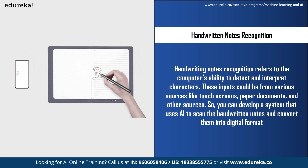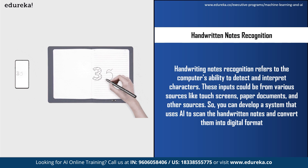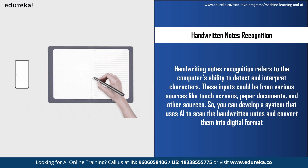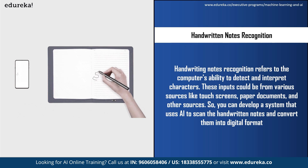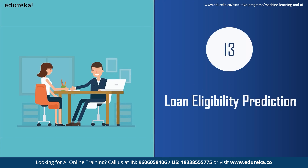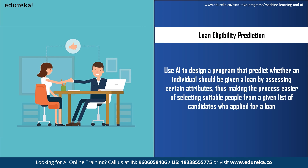The next project idea is handwritten notes recognition. This refers to the computer's ability to detect and interpret alphabets and numbers from various sources like paper documents, phone notes, and photos. Handwriting recognition is complex since different individuals have different handwriting styles. You can develop a system that uses AI to scan handwritten notes and convert them into digital format, using artificial neural networks to design the system.